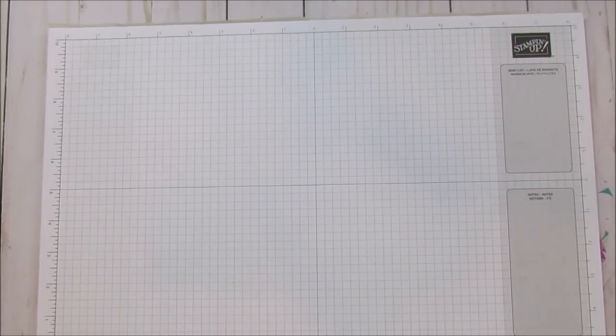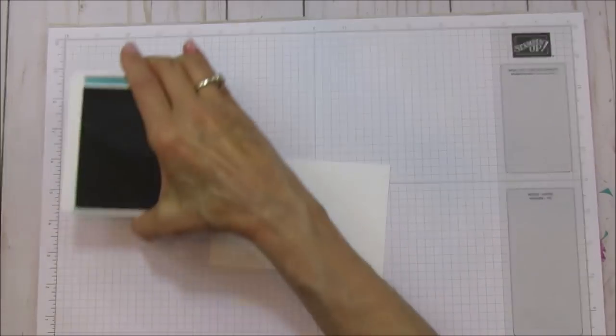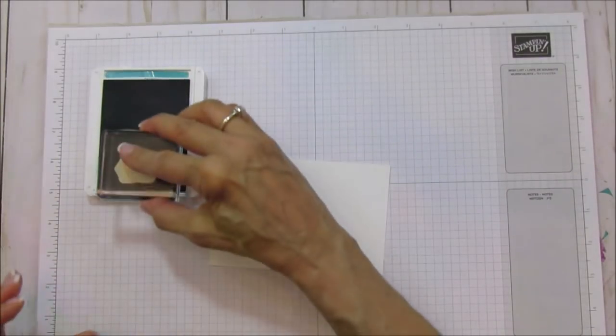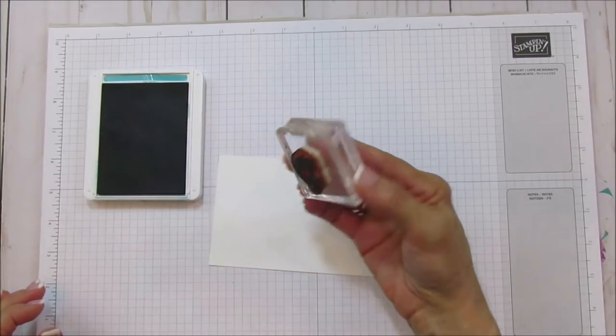Let's stamp first. This way I know I have my little elephants in the right place. We're using Bermuda Bay this time.